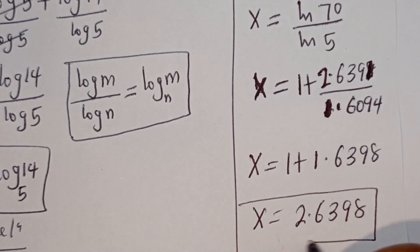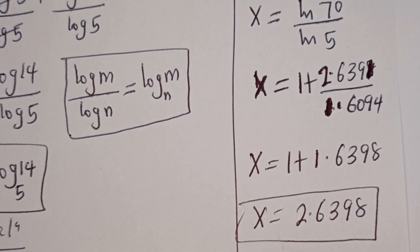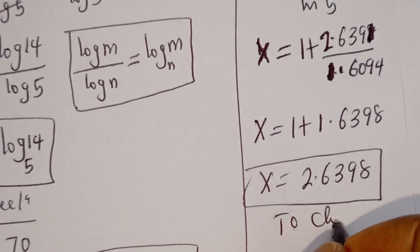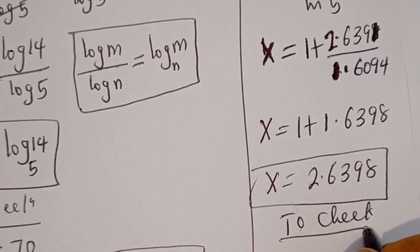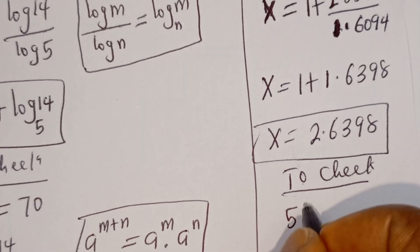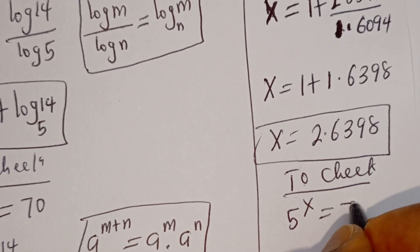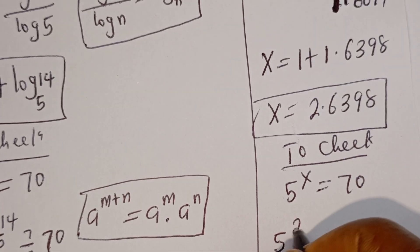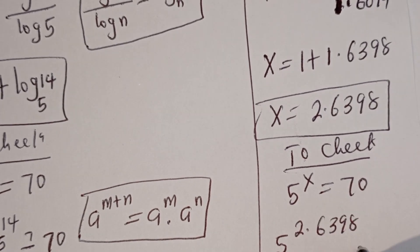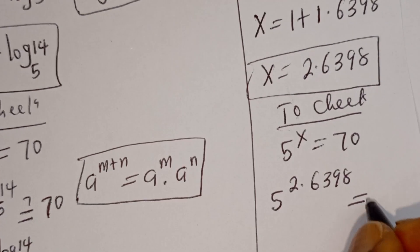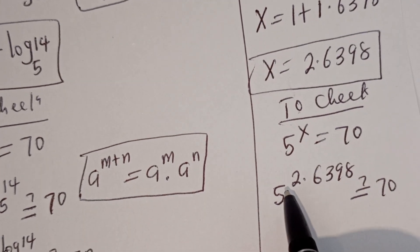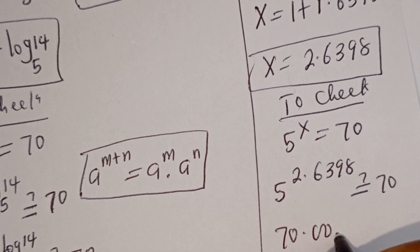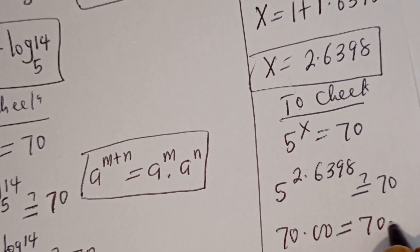And this is the value of X from the second method. We can check to confirm if this answer is right or wrong. We have the given equation 5 to the power of X is equal to 70. Then we have 5 to the power of 2.6398, and this is 70.00, which is equal to 70. Which is true.